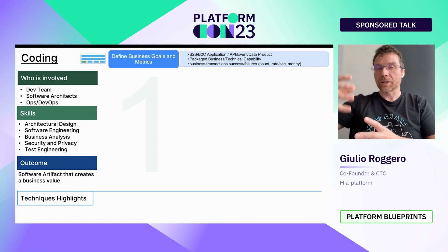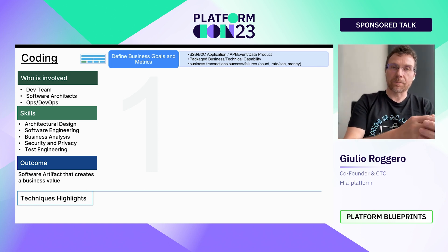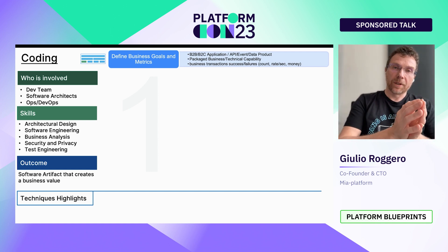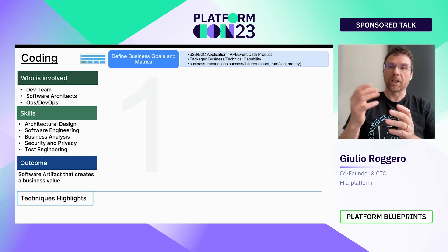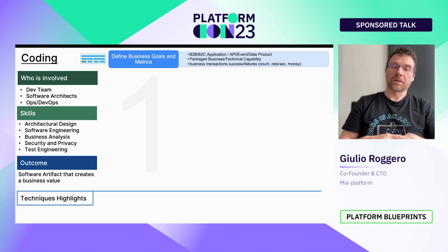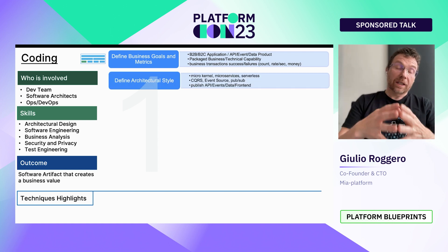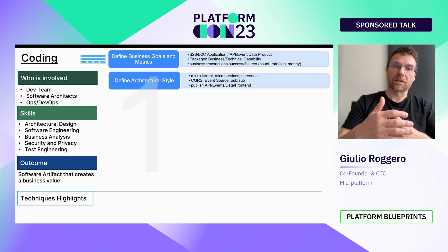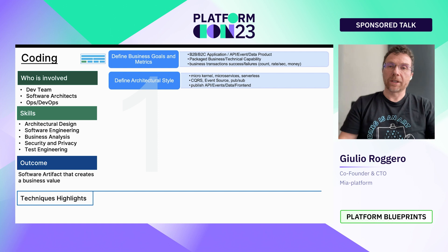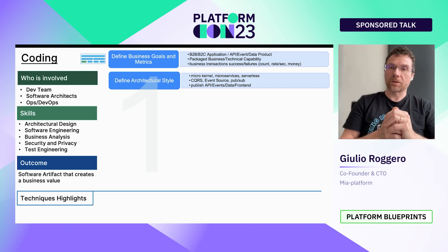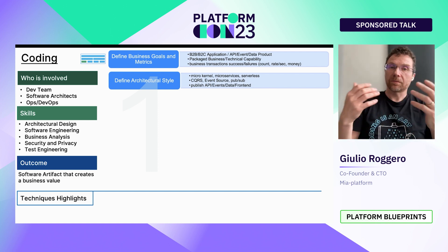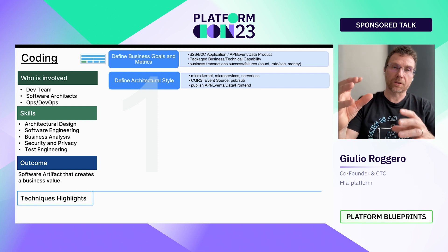You need to understand whether the application is B2B, B2C, end-to-end with mobile and websites, or a packaged business capability reusable by other teams like a payment or integration gateway. You will also need to define metrics to measure business scores — like transaction failure rate, access count rate, requests per second, and revenue. Before coding, you need to identify your preferred architectural style: microservices, micro-kernel, distributed transactions, asynchronous communication with pub-sub, publishing events or APIs. It's important to agree on the business code and architectural style before starting.